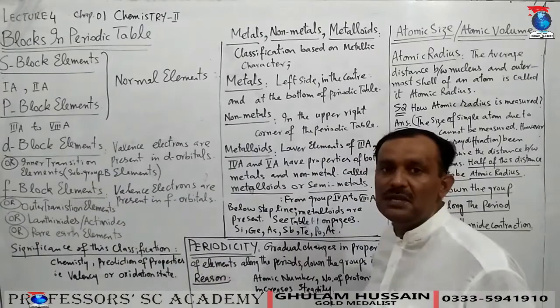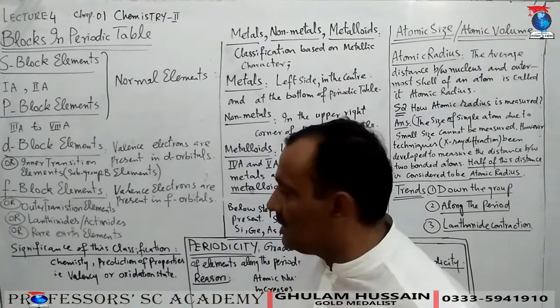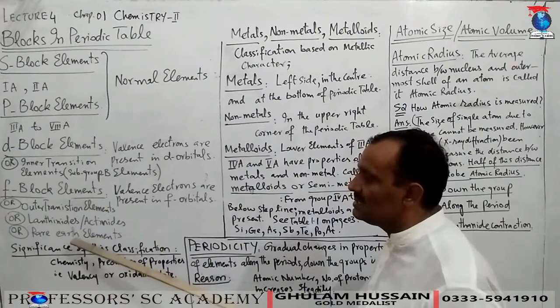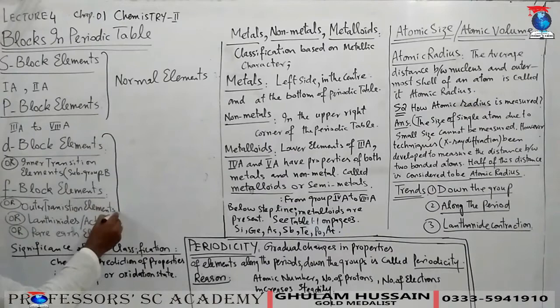D-block elements belong to subgroup B — 1B, 2B, 3B — as seen in periodic table 1.1. F-block elements are those in which valence electrons are present in f orbitals; they are also known as outer transition elements. Lanthanides and actinides are rare earth elements. D-block and f-block elements are collectively called transition elements.